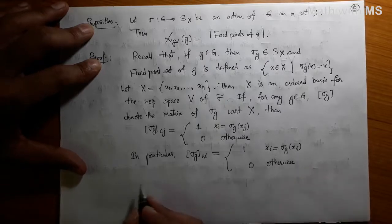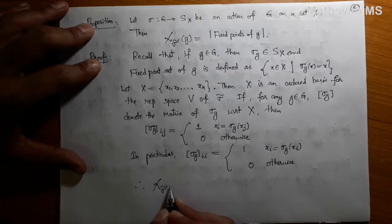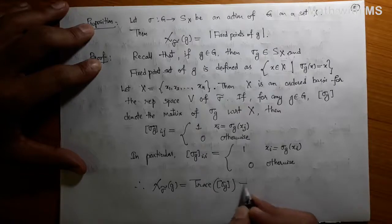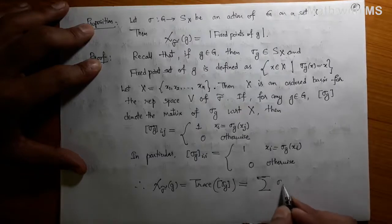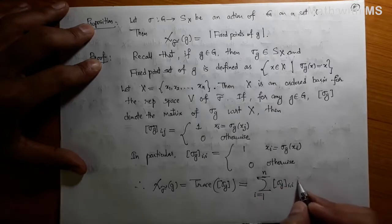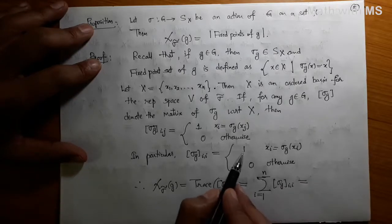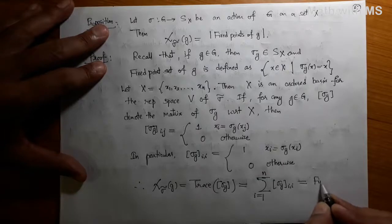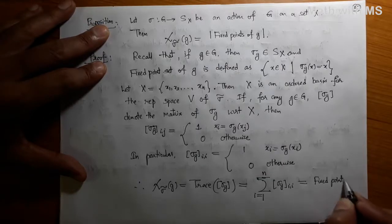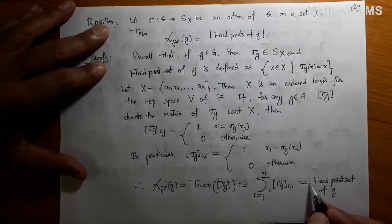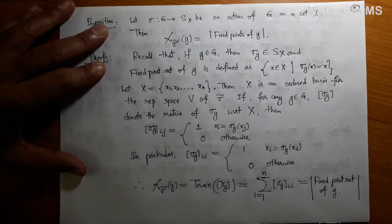In particular, the diagonal entries (i,i) are one if Xi equals sigma G of Xi — that is, if Xi is a fixed point — and zero otherwise. Therefore, chi of sigma-tilde of G, which by definition is the trace of the matrix sigma G, is the summation of the diagonal entries, which counts the number of ones. The ones are precisely the fixed points, so this equals the cardinality of the fixed point set of the group element G. This proves the proposition — a very nice description of the character in terms of the action of the group on the set X.